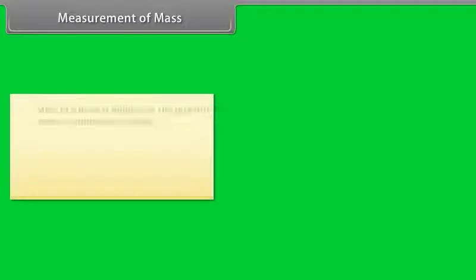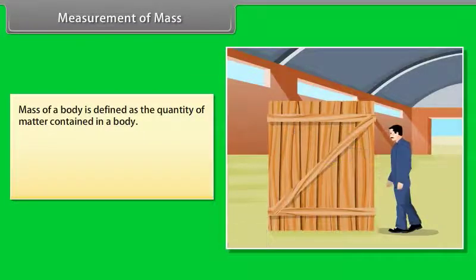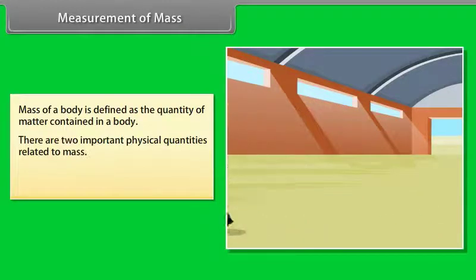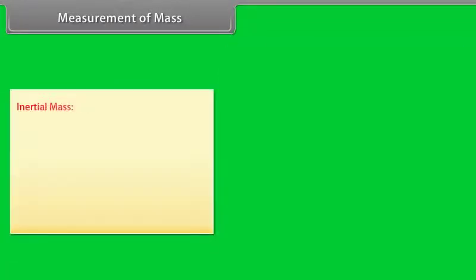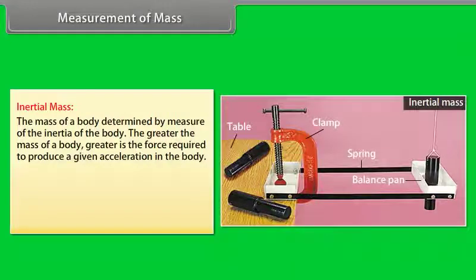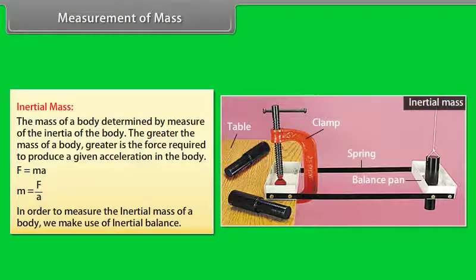Measurement of mass. Mass of a body is defined as the quantity of matter contained in a body. There are two important physical quantities related to mass of a body: inertial mass and gravitational mass. Inertial mass: the mass of the body is determined by measure of the inertia of the body. The greater the mass of a body, greater is the force required to produce a given acceleration in the body. F equals MA, or M equals F upon A.